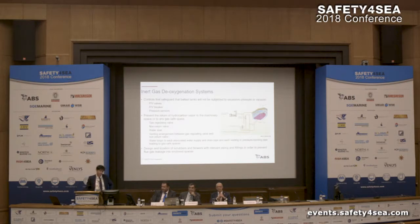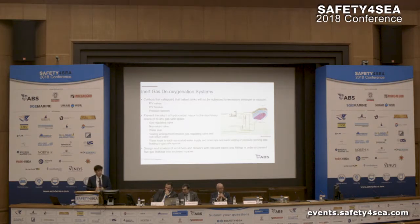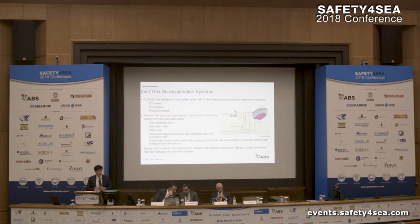For inert gas deoxygenation systems, the risk relates to whether the ballast tanks will be subject to excessive pressure or there will be gases coming back to accommodation spaces or working spaces. Within class rules there are some safeguards, like PV valves, PV breakers, etc., and some devices to prevent gases returning back to the accommodation or living spaces.